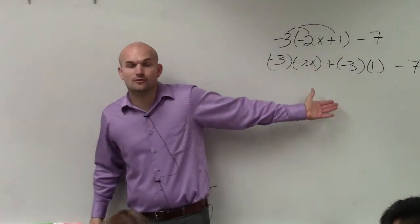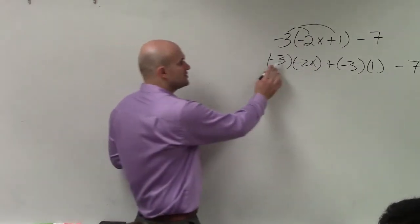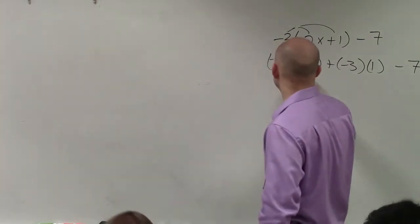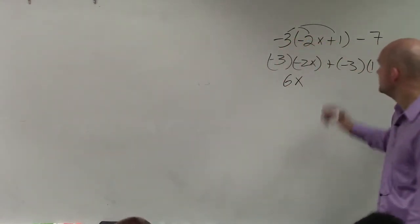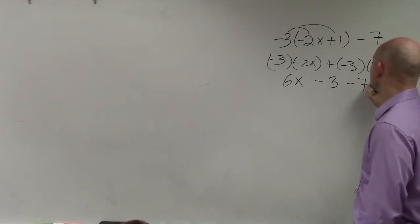Again, following the order of operations, I now need to simplify using multiplication. So -3 times -2 is going to give me a positive 6x, plus -3 times 1 gives me a -3, and then minus 7.